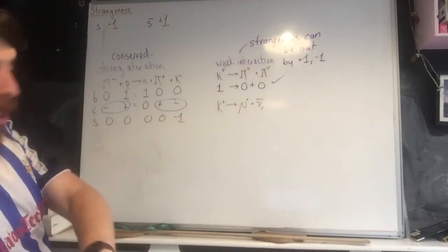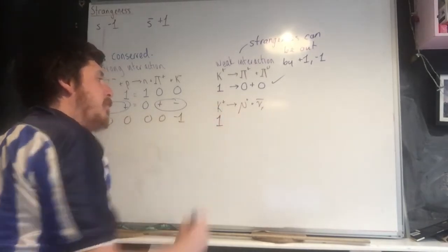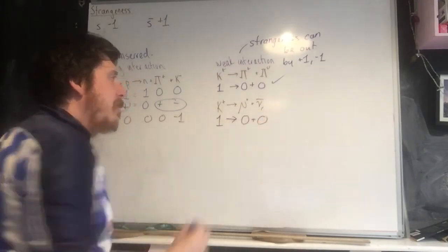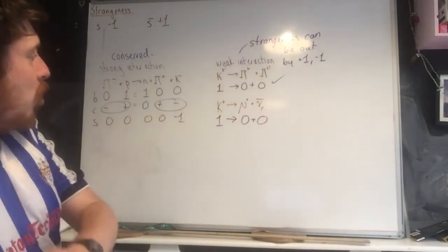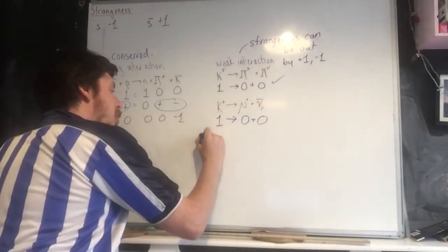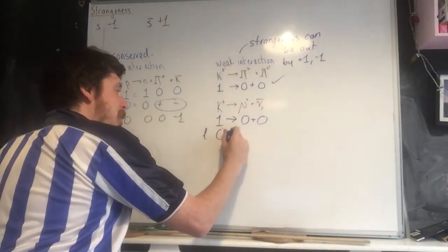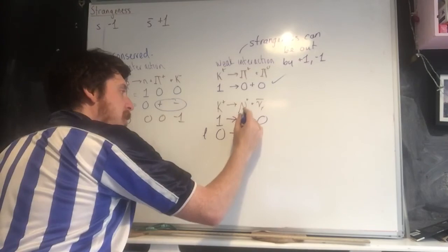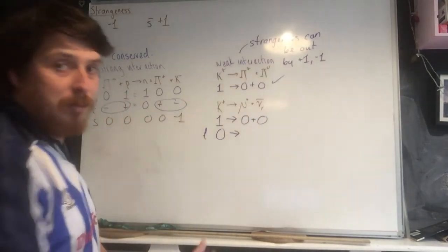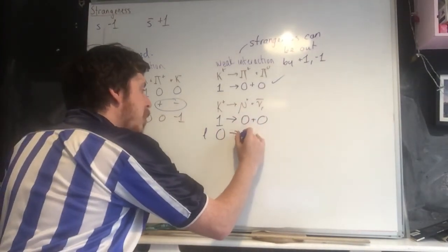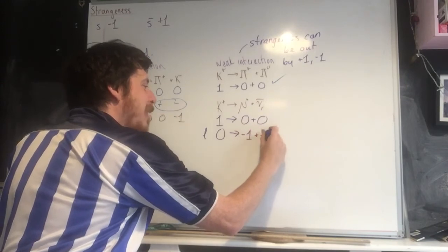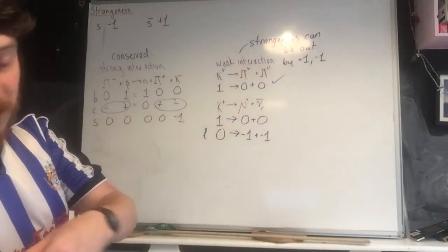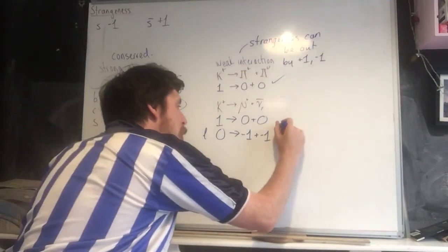In this situation, we have strangeness of one, and this is zero, and this is also zero. So that's fine. The issue with this reaction is the lepton number. Kaons are not leptons. This is an anti-lepton because it's a muon plus, so that's minus one. This is also an anti-lepton. So you have minus two on that side and zero on this side. So this cannot happen.